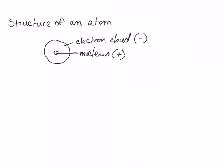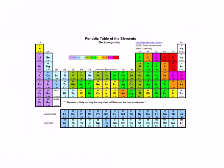Remember that electrons are small and light, therefore they have properties of particles and waves. When we talk about bonding, we're interested in what are called the valence electrons. The valence electrons are the electrons in the outermost shell. For example, carbon has four valence electrons, and you'll notice if you look at the periodic table, the number of valence electrons corresponds to the column number or group number.